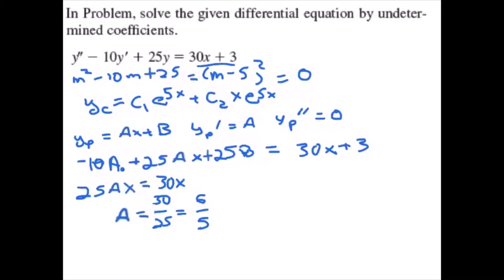To solve for b, we take our other terms. So 25b minus 10a equals 3.